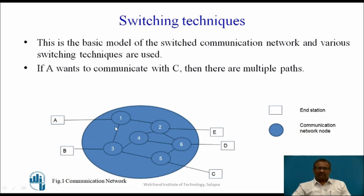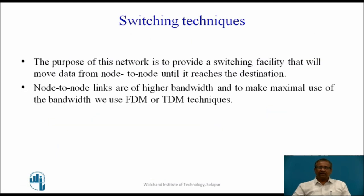Another path is node 1, 2, 3, 2, 5 and finally to C. So there are different paths available, and which path is chosen depends upon the switching technique used. The purpose of this network is to provide a switching facility that will move data from node to node until it reaches the destination.